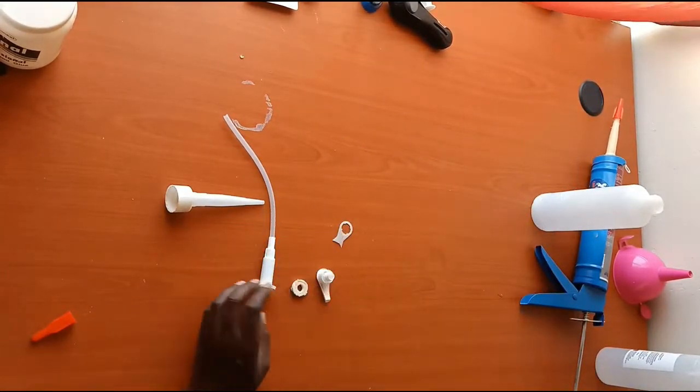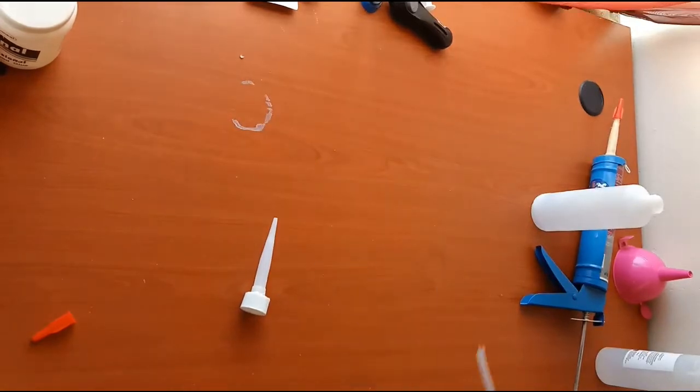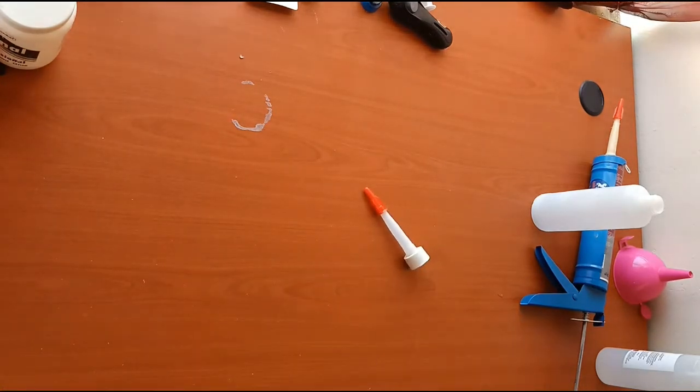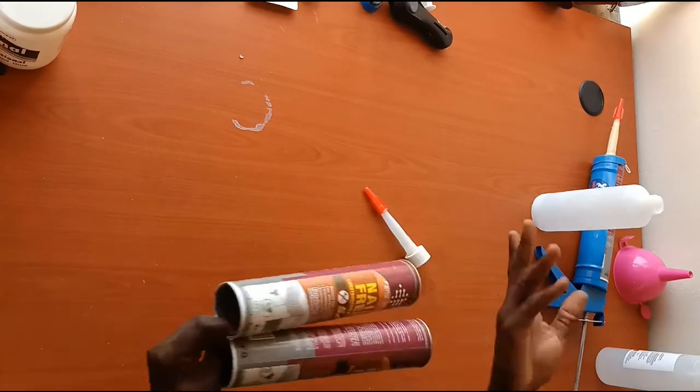After cutting it off, I inserted it from inside out and applied Nail Free glue. That's why I have two lids: one for the sanitizer and one for the normal water bottle.